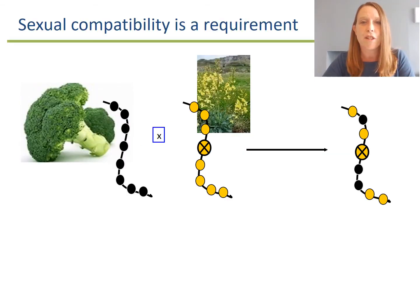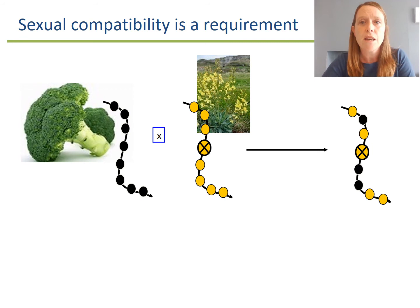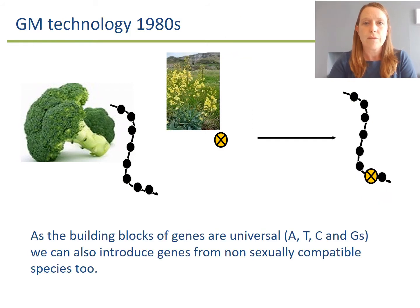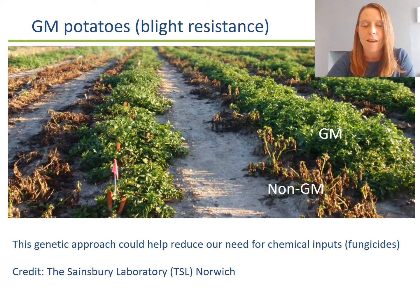Traditional breeding approaches rely on the fact that plants are sexually compatible and we inherit half of our genetic material from each parent. So if we want to introduce a gene for disease resistance from a wild type into an elite variety, as well as introducing the gene we do want, we're also introducing tens of thousands of genes we don't want. We would then have to take the offspring and repeatedly back-cross it to our elite line over several generations. GM technology, developed in the 1980s, allowed us for the first time to clone just the gene we wanted and introduce it into our elite background, very much speeding up the process.